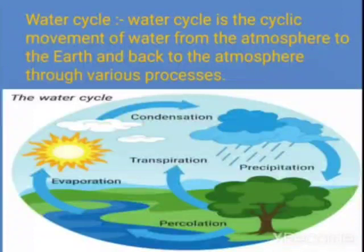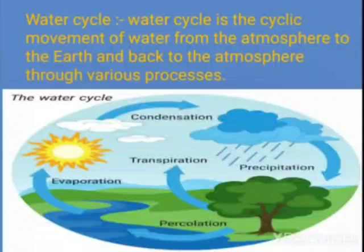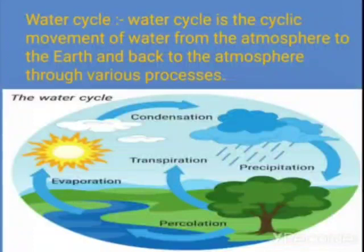In the seas and oceans, because of the heat of the sun, water gets evaporated and reaches high up. Because of the cool atmosphere it converts into water droplets, and the water droplets come down as rain again. This cycle goes on and on. The water cycle is the cyclic movement of water from the earth to the atmosphere and back to the earth through various processes.